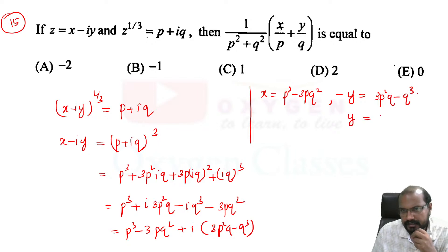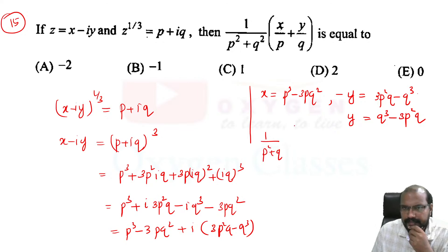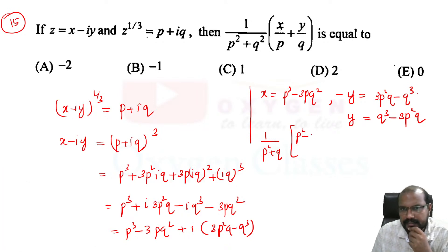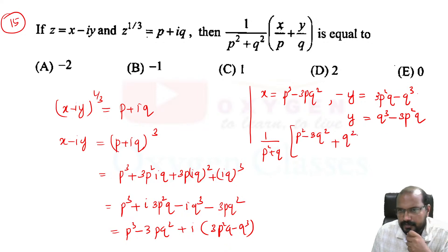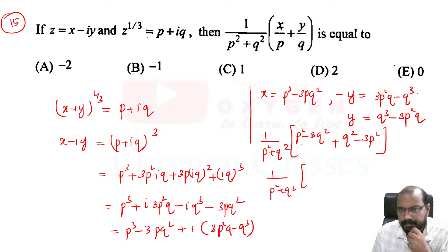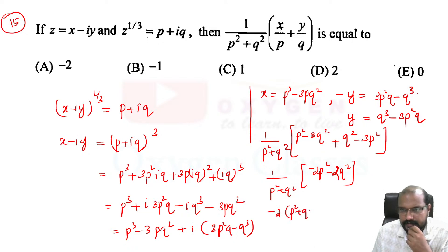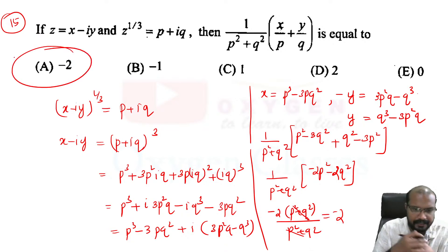From the imaginary part, q³ minus 3p²q equals 1/(p² + q²) times (x/p). Simplifying the expression for q: we get q² minus 3p² over p² plus q², giving minus 2p² over p² plus q². This simplifies further to minus 2p² plus q² divided by p² plus q², giving the answer minus 2. Option a is correct.